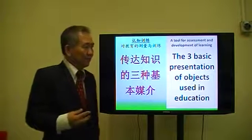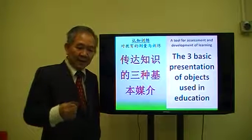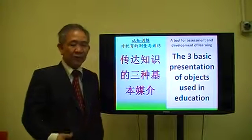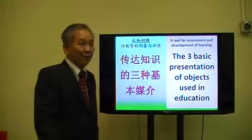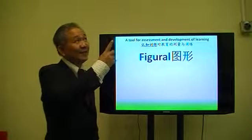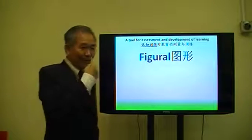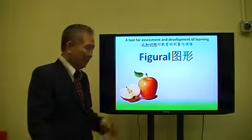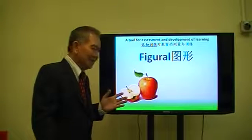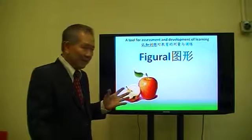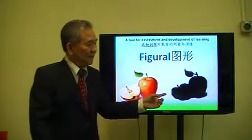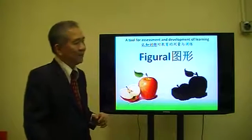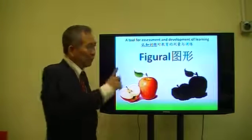There are three basic presentations of objects used in education to teach or transmit knowledge to our children. When we are young, our parents use figural to teach us — pointing at the ceiling light saying 'this is light,' pointing at themselves saying 'call me father,' or showing an apple and saying 'this is apple.' That is easy to understand. It's figural. Even a drawing that doesn't look exactly like an apple but has the shape — we can still recognize it as an apple. But it's difficult to teach knowledge only through figural.